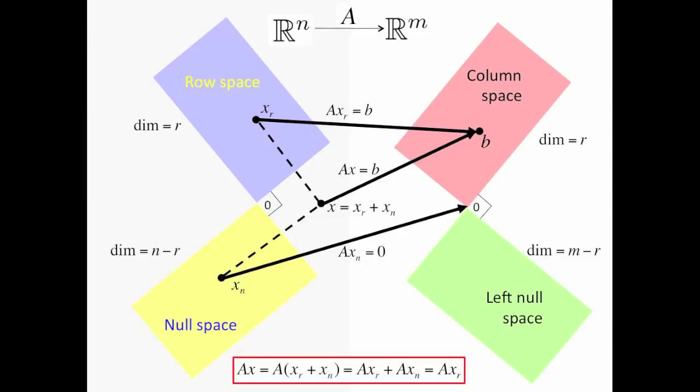This picture is very important, and it tells you everything about what happens when you multiply a vector x by A. What we're going to see next is that it tells us how to find the best approximation to a solution when Ax equals b does not have a solution. That's a topic known as linear least squares.